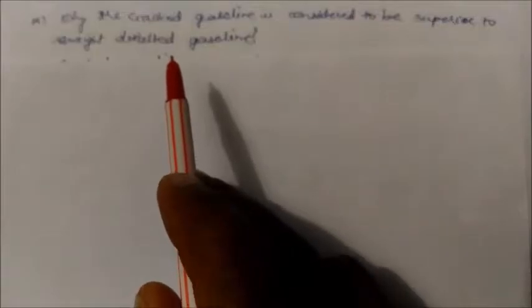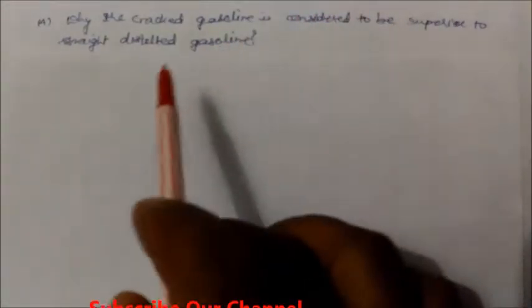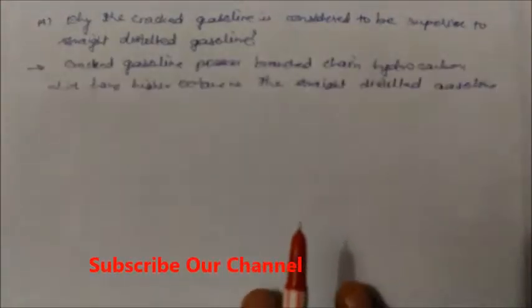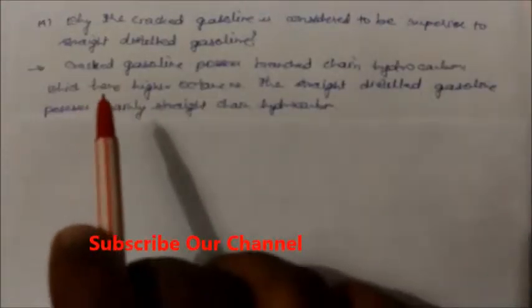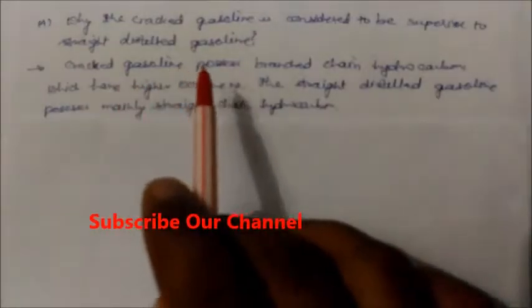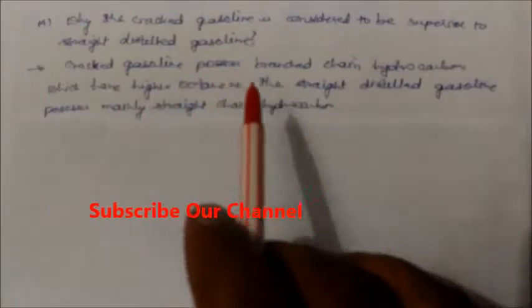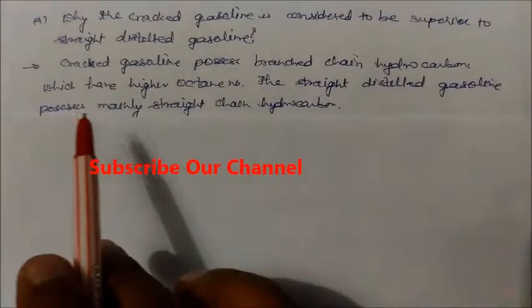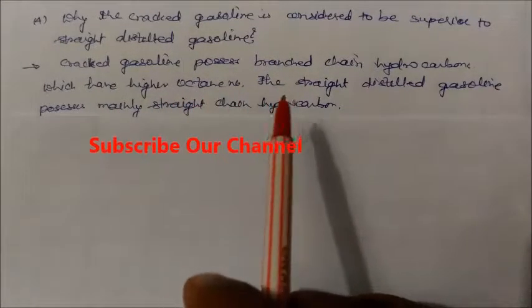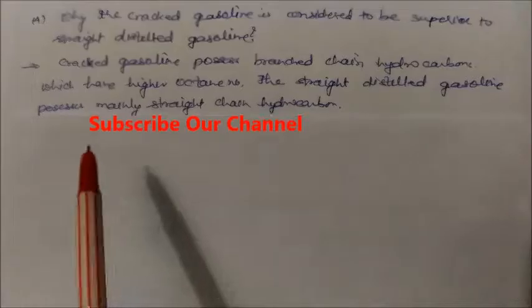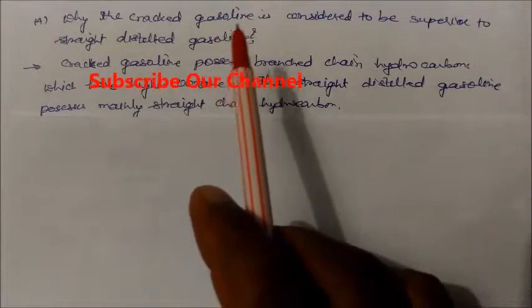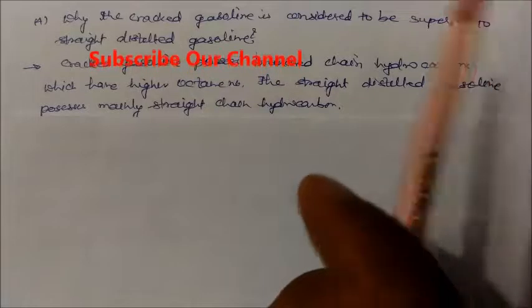Why is cracked gasoline considered superior to straight-distilled gasoline? Cracked gasoline possesses branched chain hydrocarbons which have a higher octane number. Straight-distilled gasoline possesses mainly straight chain hydrocarbons. That is why cracked gasoline is considered superior.